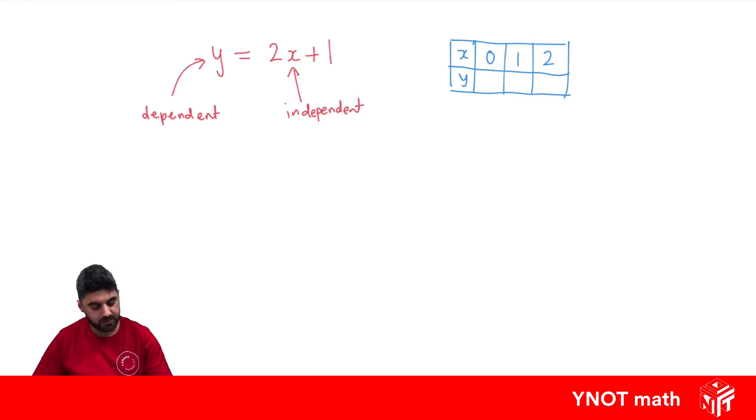So we can put those into the formula. When x is 0, we get 2 times 0, which is 0 plus 1 is 1. When x is 1, we get 2 times 1, which is 2, plus 1 is 3. When x is 2, we get 2 times 2, which is 4, plus 1 is 5.